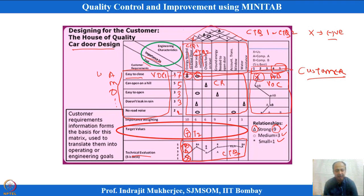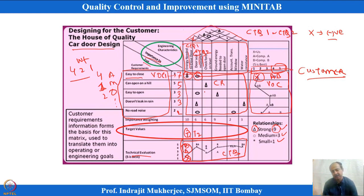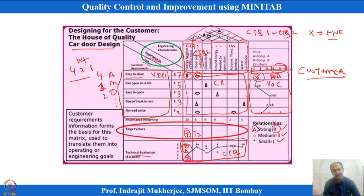Kano model scoring: attractive features can be given a score of 4, and must-be components a score of 1 — a scale of 4 to 1 can be used. This is a weightage from the Kano analysis. We can also ask customers for ratings. With voices prioritized by Kano, we then want to prioritize the CTQs — CTQ 1 through CTQ m — to determine which is most important.